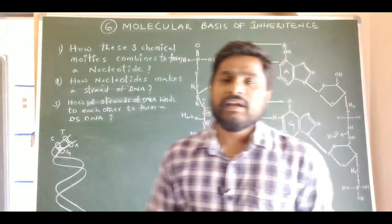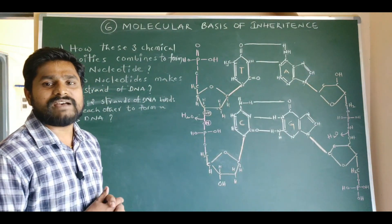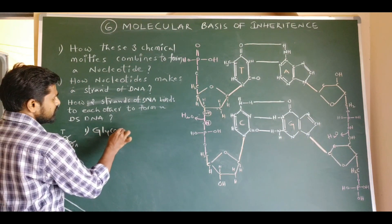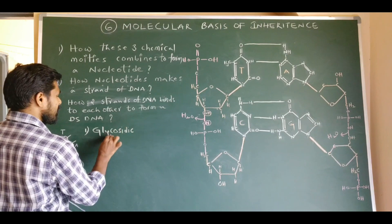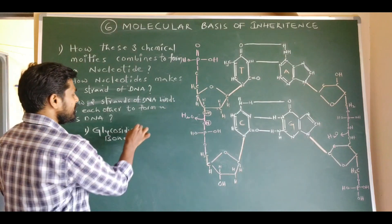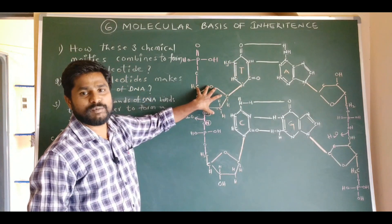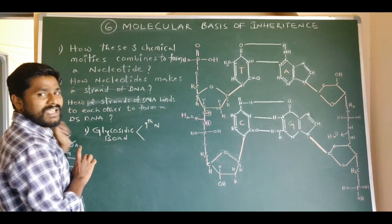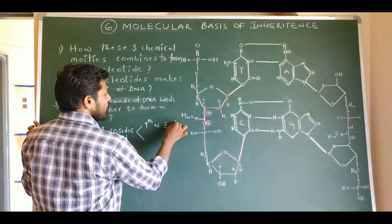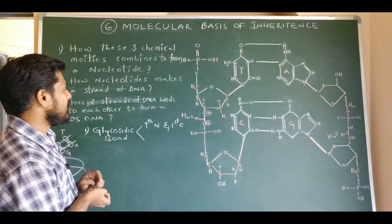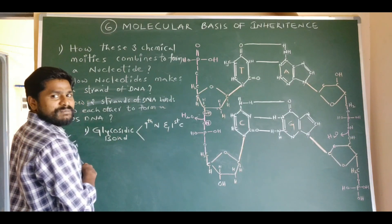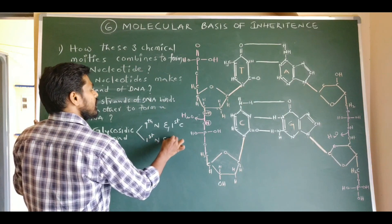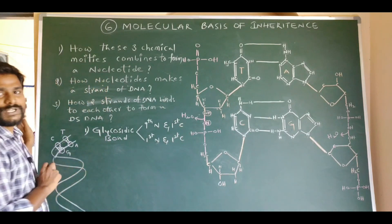From this chemical structure of DNA, we know that the DNA molecule has three types of bonds. The first is the glycosidic bond, present between a nitrogen base and ribose sugar. In the case of purines, the glycosidic bond is established between nitrogen at the ninth position of the purine and the first carbon of the pentose sugar. In the case of pyrimidines, it is established between nitrogen at the first position of the nitrogen base and the first carbon of the pentose sugar. This is very important.